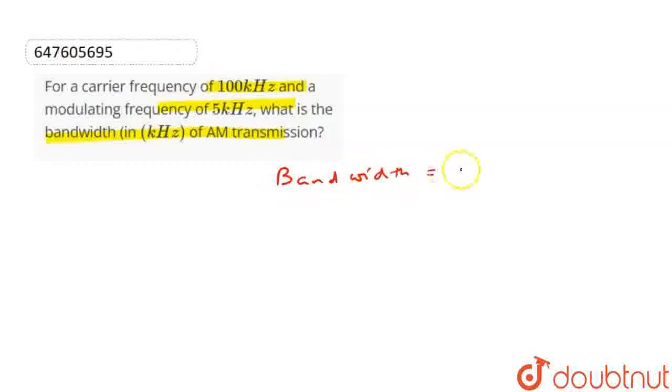Bandwidth for AM transmission equals 2 omega m. This is 2 times 2 pi fm, where fm is 5 kHz.